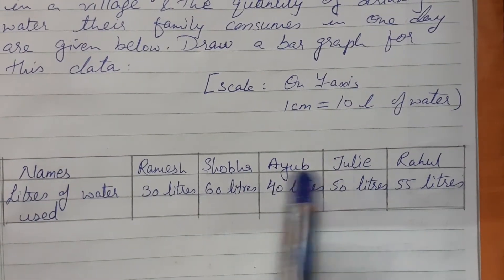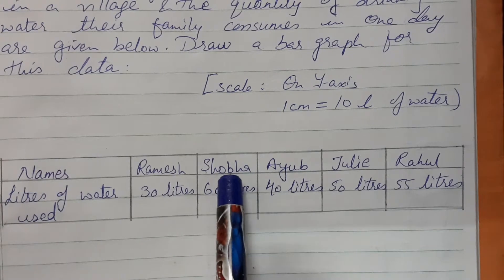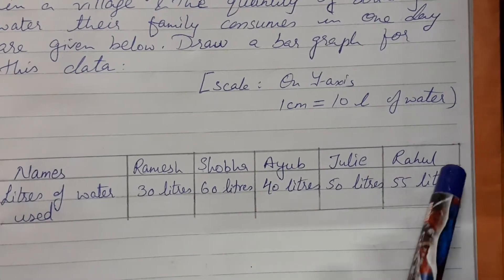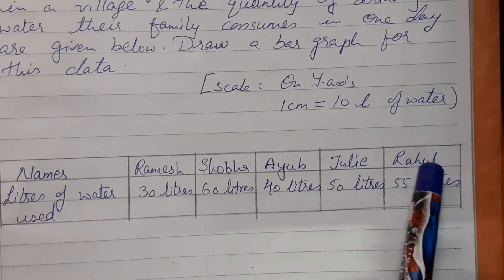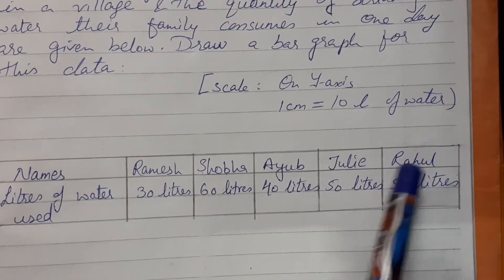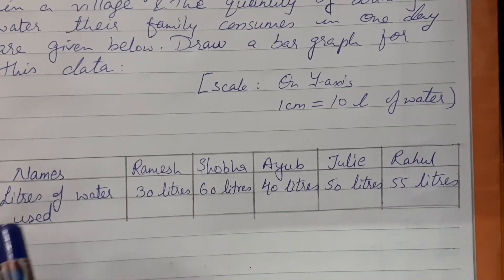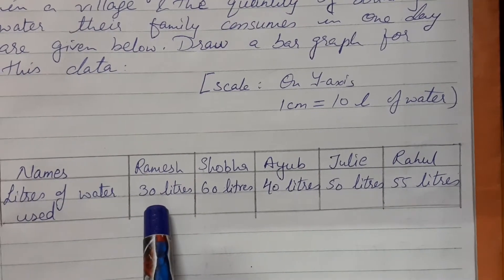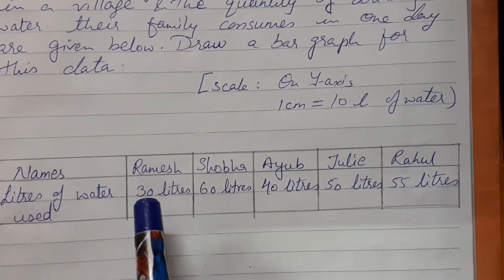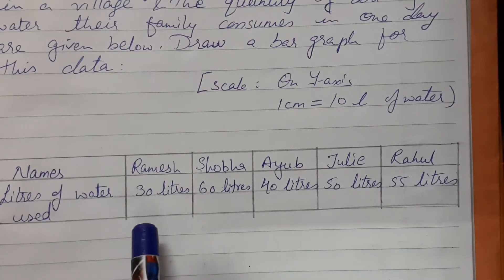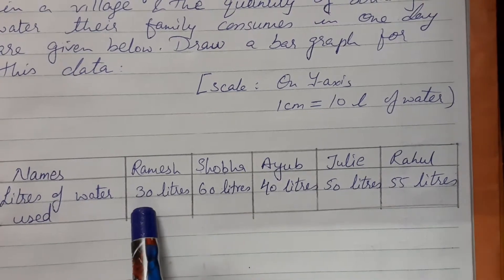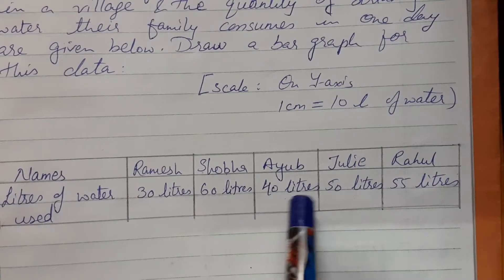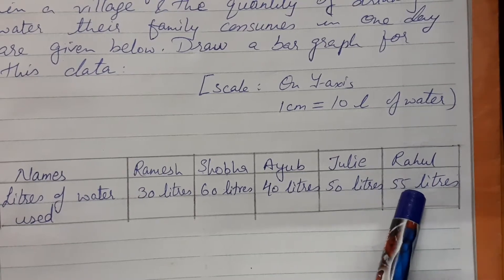The names given are Ramesh, Shobha, Ayub, Julie, and Rahul. These will be taken on the x-axis. The liters of water used are the variable values to be taken on the y-axis: 30 liters, 60 liters, 40, 50, and 55.